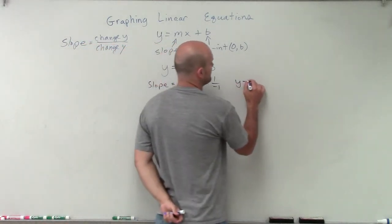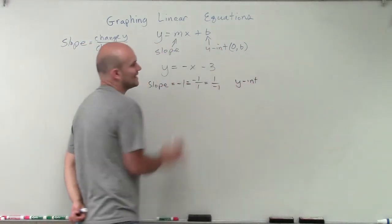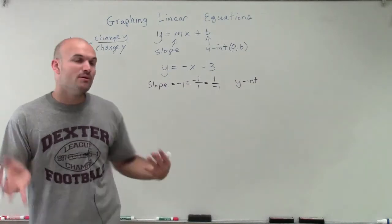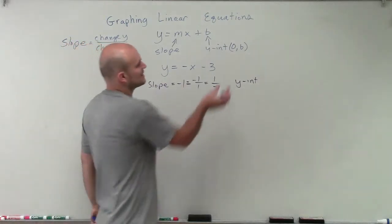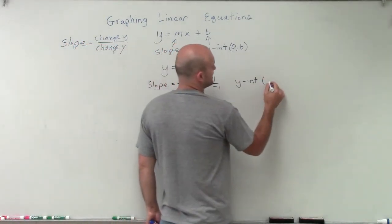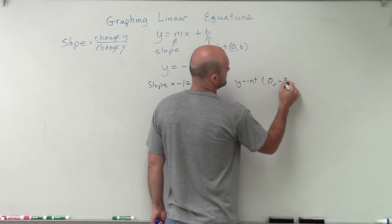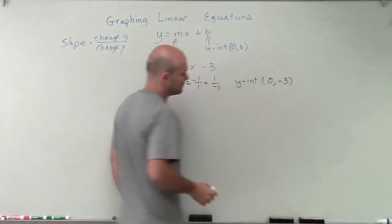When we write the y-intercept, I know I have a y-intercept value of negative 3. But we want to write it as a coordinate point. In this case, it's going to be 0 comma negative 3.